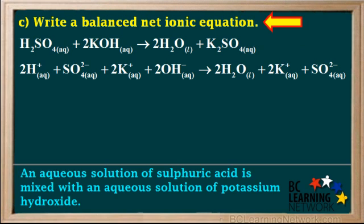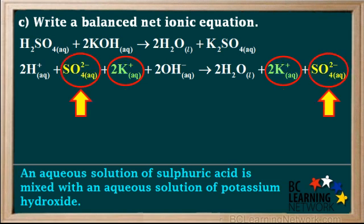In part C, we're asked to write a balanced net ionic equation. A net ionic equation is what we get after we discard the spectator ions. Notice there are two aqueous K plus ions on both sides of this equation — they are identical, so K plus is a spectator ion and we circle it. Also notice we have an aqueous SO4 2 minus ion on both sides, so SO4 2 minus or sulfate is also a spectator ion in this case, and we circle that as well.